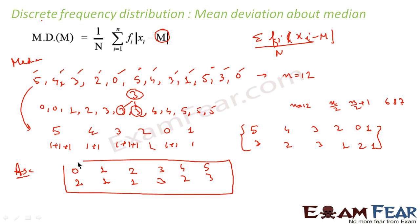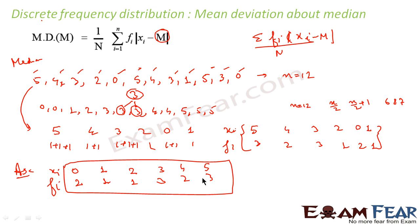This is the frequency table arranged in ascending order, with xi and fi columns. We know there are 12 terms total because 2+1+1+3+2+3 equals 12. Since 12 is even, we need to find the 6th and 7th terms. To do that, we'll find the cumulative frequency.